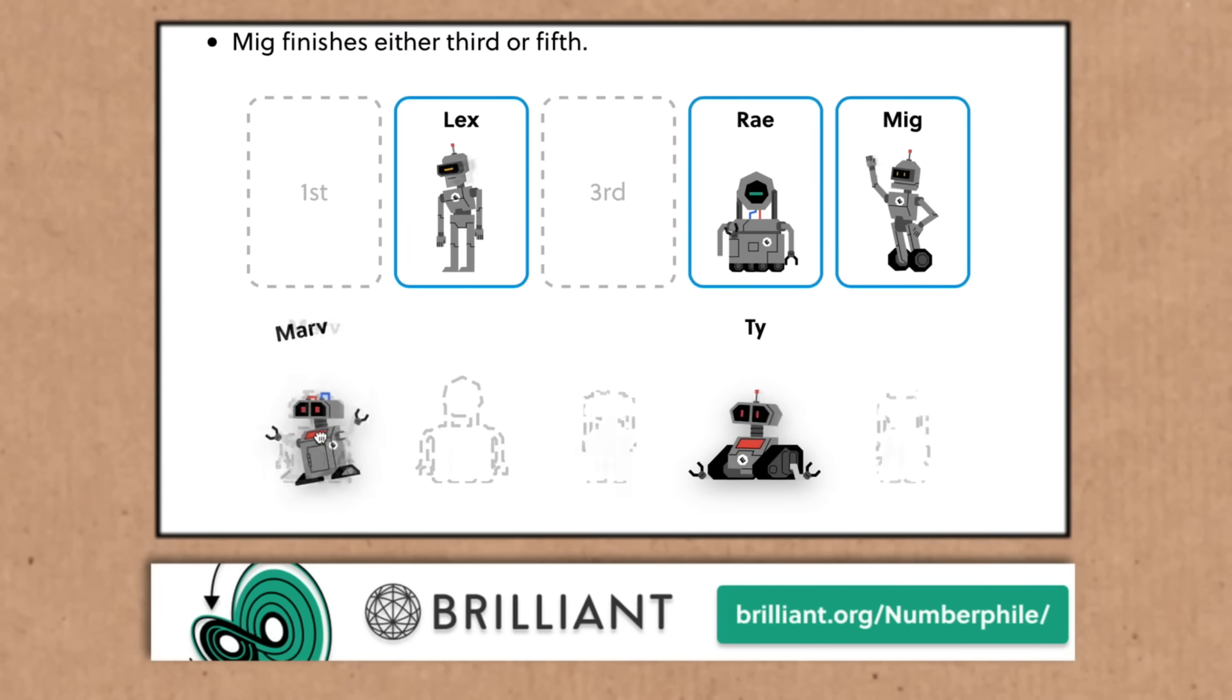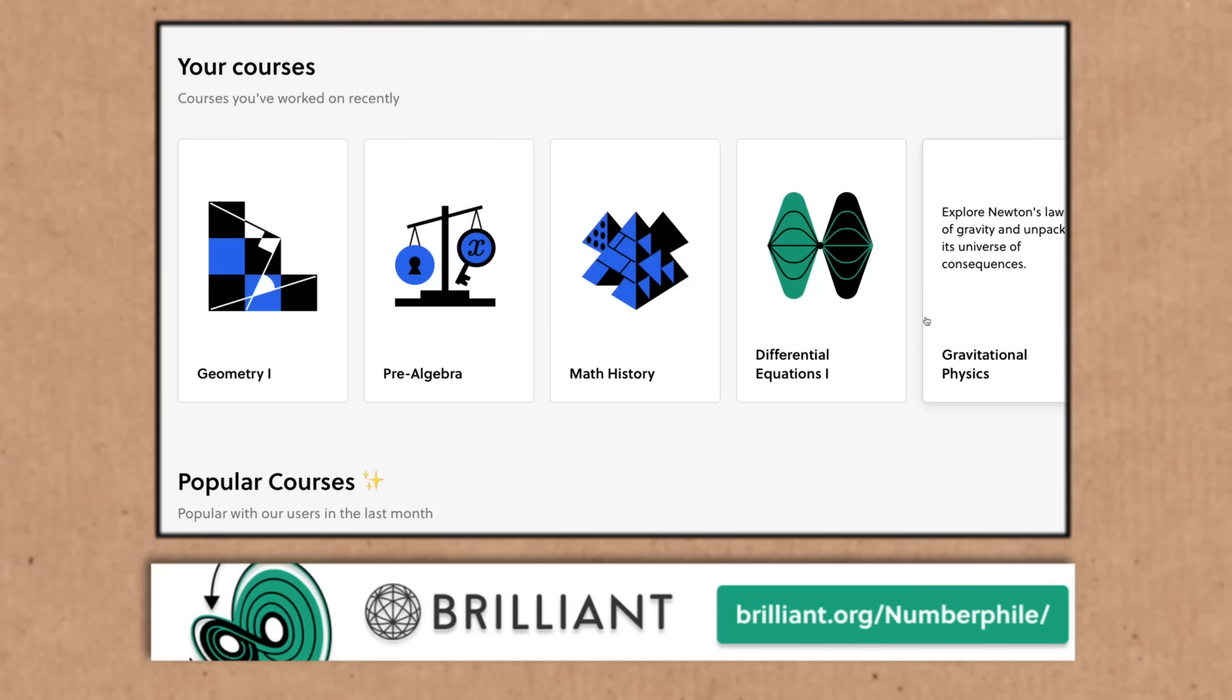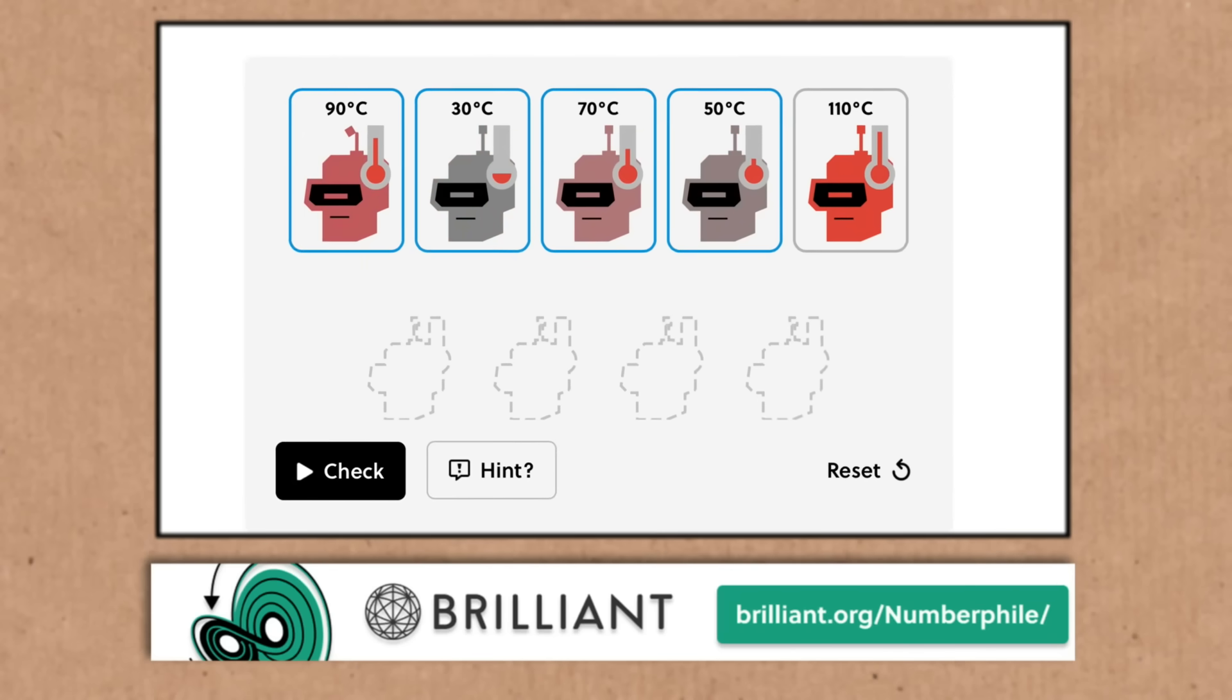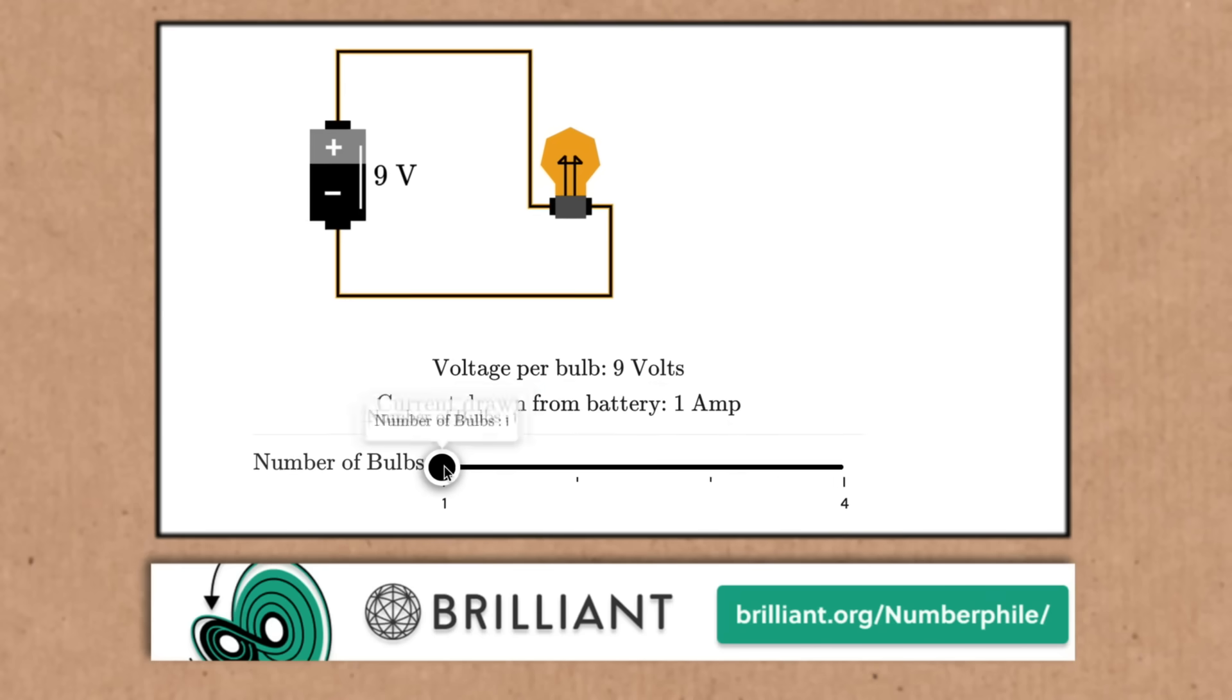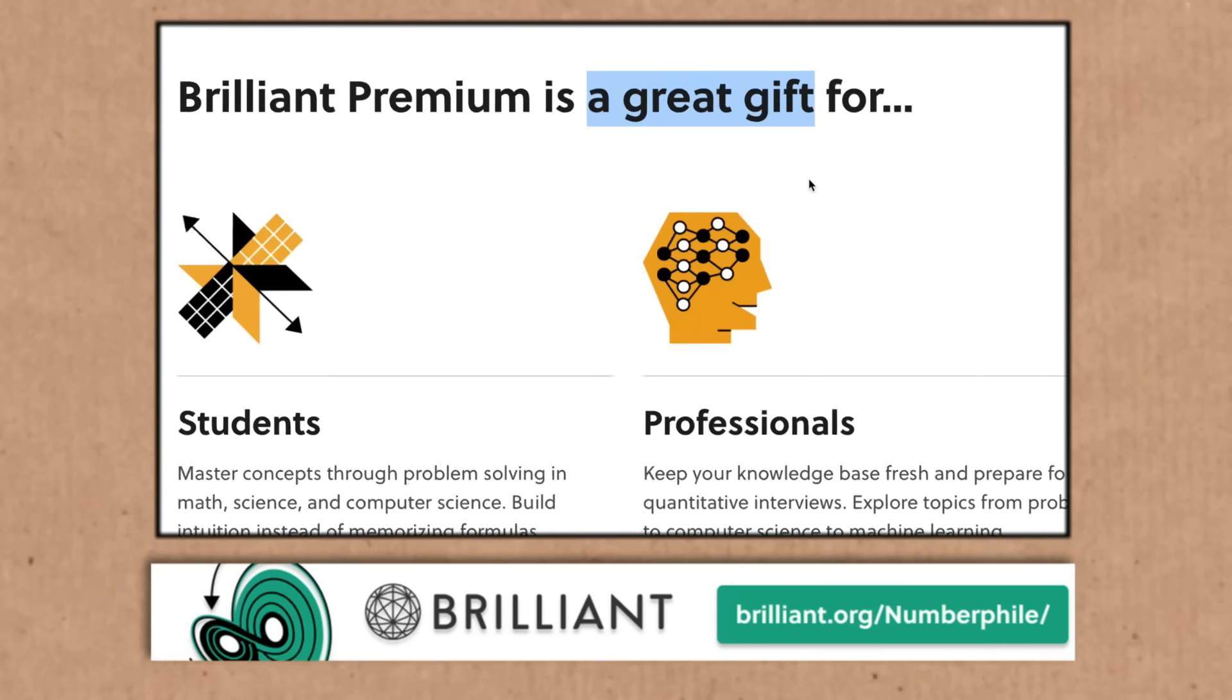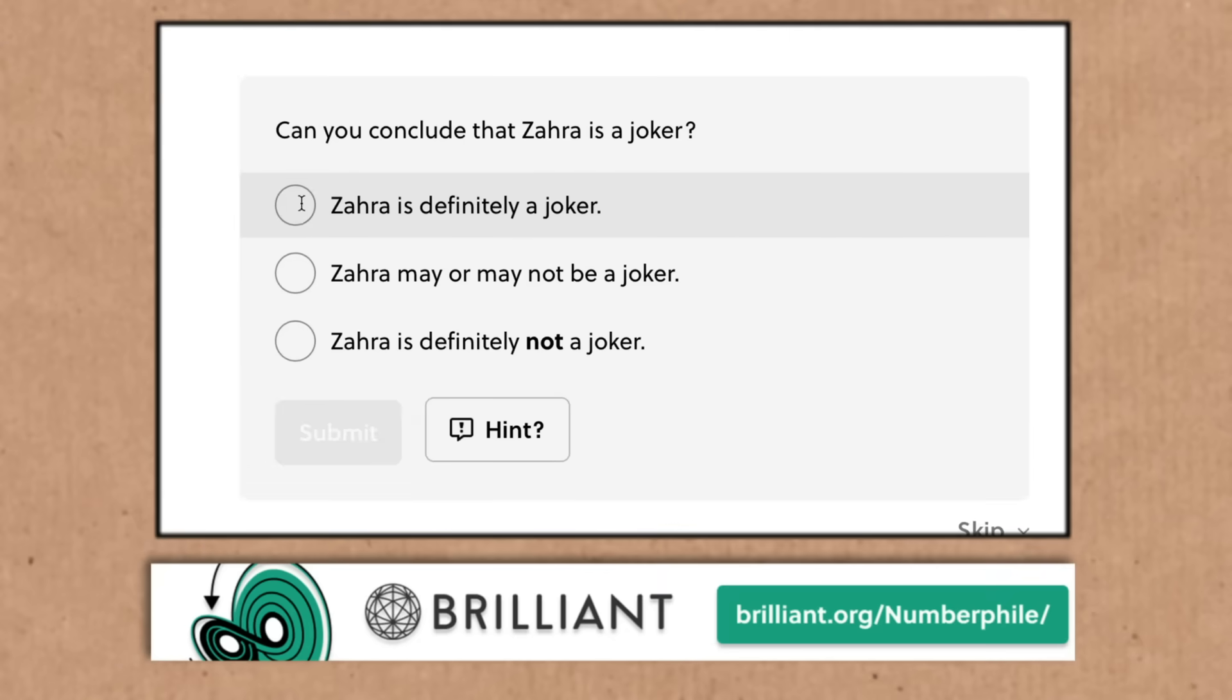This episode was supported by Brilliant, loving creators of puzzles and courses like these. Brilliant's all about interaction, getting you to move things around, click and think, slide things into place. That's the key to understanding, really engaging with what you're learning. Check out their huge and ever-growing library of material at brilliant.org slash numberphile. Using that slash numberphile will bag you a 20% discount on their premium subscription by the way. And if you're looking for that something special for the learner in your life, you can also give a Brilliant subscription as a gift. Check them out, brilliant.org slash numberphile.